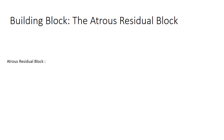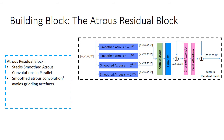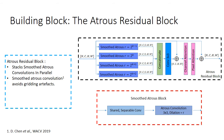The atrous residual block consists of 4 smooth atrous convolutions stacked in parallel. We use smooth atrous convolutions proposed by Chen and others, comprising of a shared separable convolution followed by an atrous convolution layer. This helps avoid gridding artifacts seen in plain atrous convolutions. We also use channel attention and pixel attention layers, which help in tending to highly degraded parts in the image.